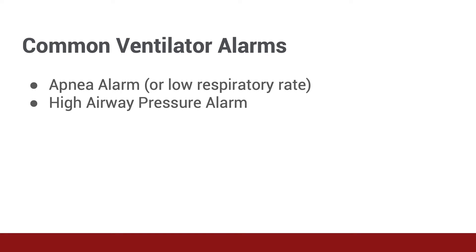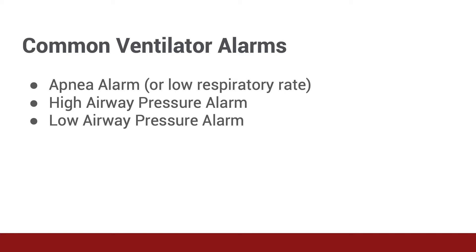Pressure alarms are very important to monitor in the vented patient. Secretions, water in the tubing, or kinks can cause high pressure alarms — suction the patient and look for tube kinking. If that doesn't fix the problem, disconnect the patient from the circuit and manually ventilate with a bag valve. Low pressure alarms can indicate a leak in the system, such as a deflated endotracheal tube balloon or a tubing disconnection. It's important to systematically follow the vent tubing from the machine to the patient to make sure lines are connected and there are no leaks. Alarms can also detect changes in expiratory volumes; decreasing expiratory volumes indicate a leak, similar to low airway pressure alarms.